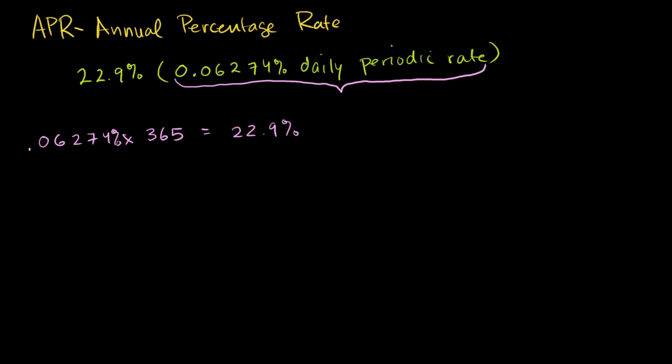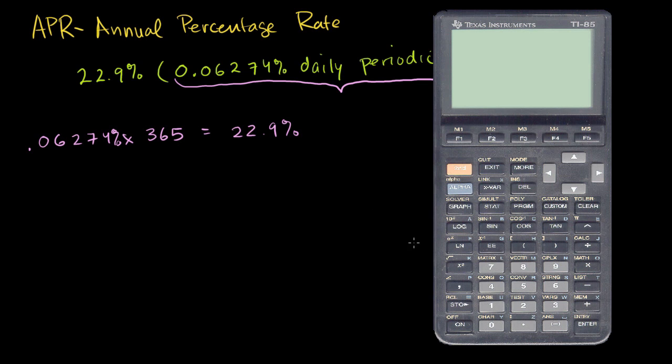Let me get my calculator. So 0.06274—remember this is a percent—times 365 equals, right on the money, 22.9%. You might say, what's wrong with that? They're charging 0.06274% per day for 365 days a year, which gives 22.9%.